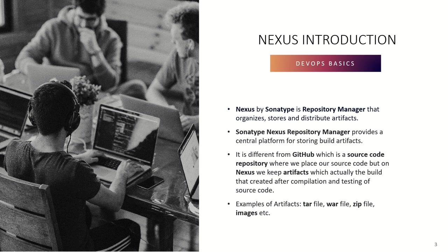The difference between GitHub and Nexus: GitHub has the raw source code that developers create, while Nexus has the tested build generated from that source code. Examples of artifacts include tar files, WAR files, and ZIP files. Images and certain documents can also be considered artifacts. In today's example, our artifact is a WAR file. We'll see how to create it, upload it to Nexus, and use Jenkins to automate this process.